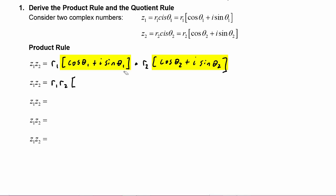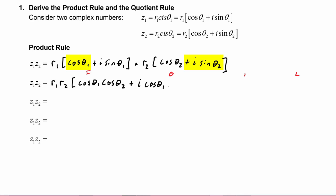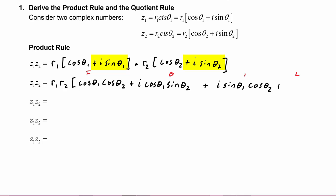Now we're going to FOIL these two binomials. First times first, we get cosine θ1 cosine θ2. Then outer times outer, we get plus i cosine θ1 sine θ2. Inner times inner, we get plus i sine θ1 cosine θ2. Then last times last, we have plus i² sine θ1 sine θ2.